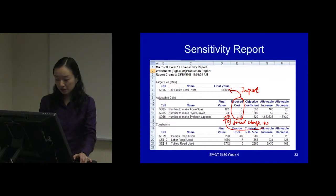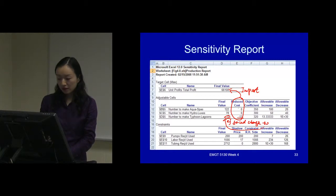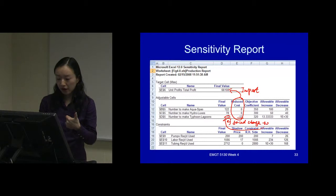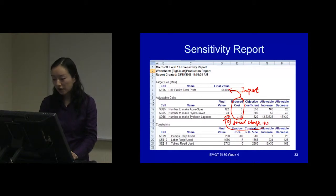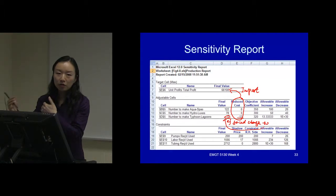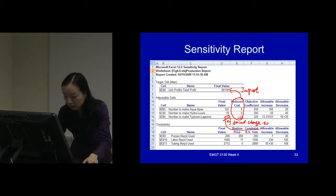In a maximization problem, any decision variable with a negative reduced cost should have a zero final value, because if it has a negative reduced cost, increasing it by one more unit will decrease your objective function value. So it should remain zero. We calculated this 13 using the unit profit subtract the total shadow price — the total resource cost calculated from the shadow price. So that's the reduced cost.